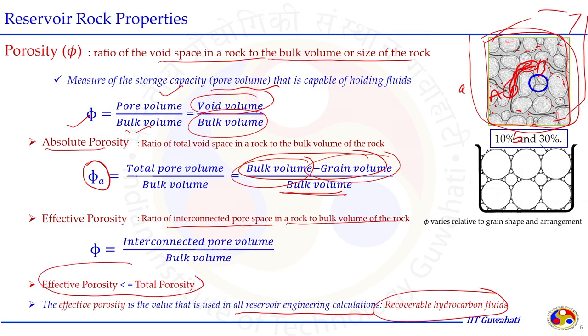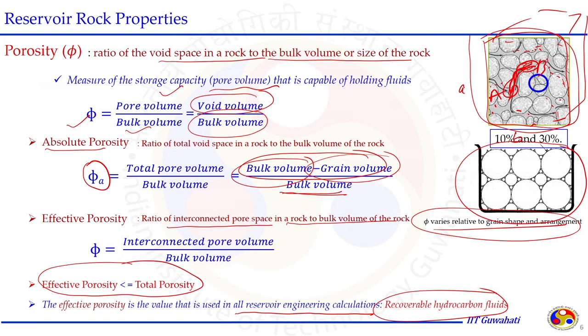Effective porosity is always less than or equal to total (absolute) porosity. The value of porosity in reservoir domains varies typically from 5% to 40%, depending on how irregular-shaped grain particles are arranged underneath the surface, overburden pressure, and reservoir fluid pressure. Even within a small section, porosity can vary.